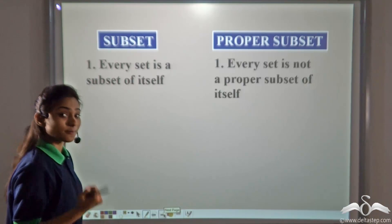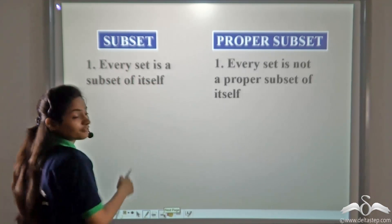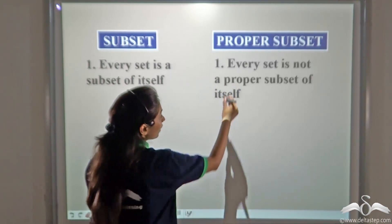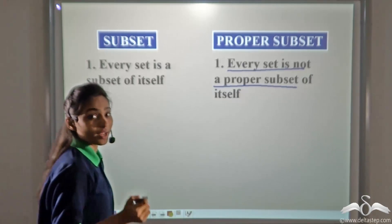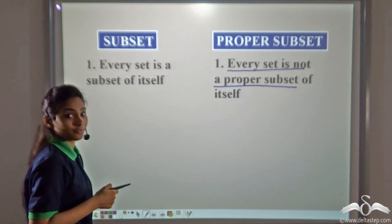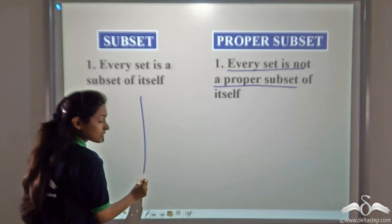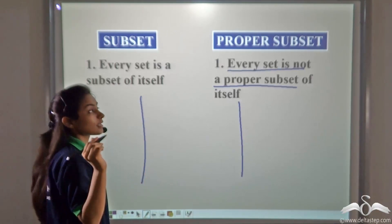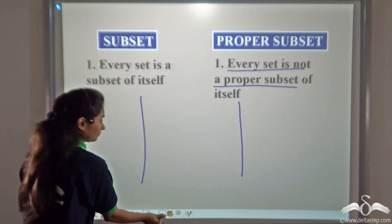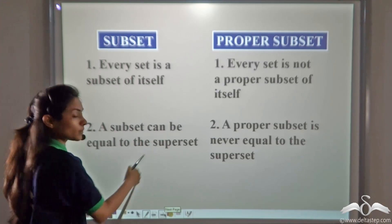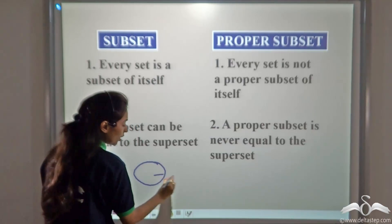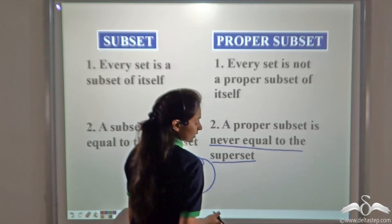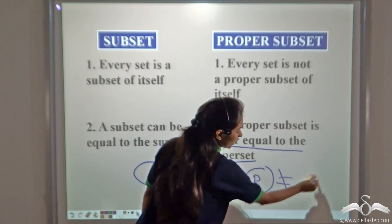What is the difference between subsets and proper subsets? Every set is a subset of itself — we learned this in the previous lecture. But every set is not a proper subset of itself. Whenever we list proper subsets, we do not write the set itself, because the set itself is never its own proper subset. A subset can be equal to the superset, but a proper subset is never equal to the superset.